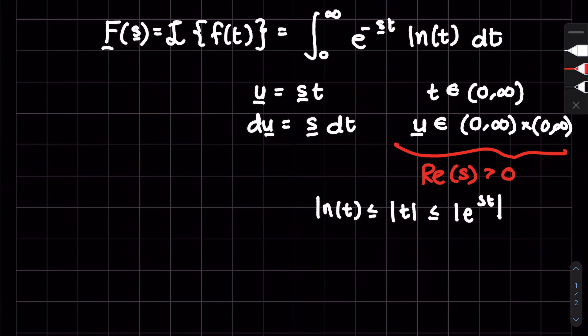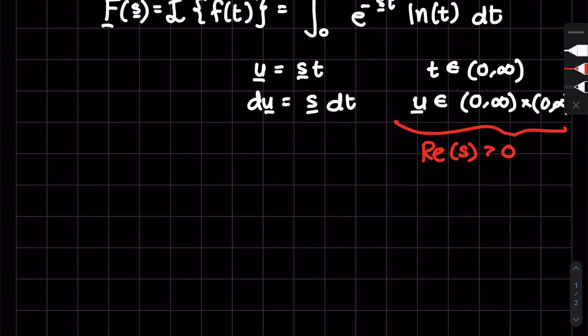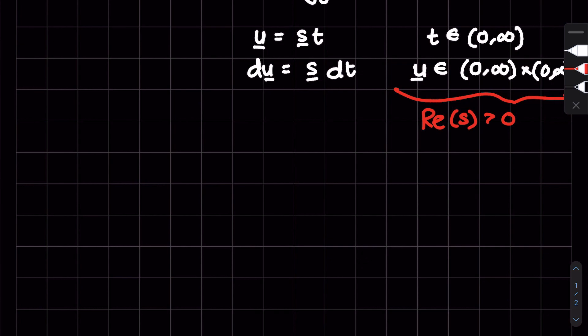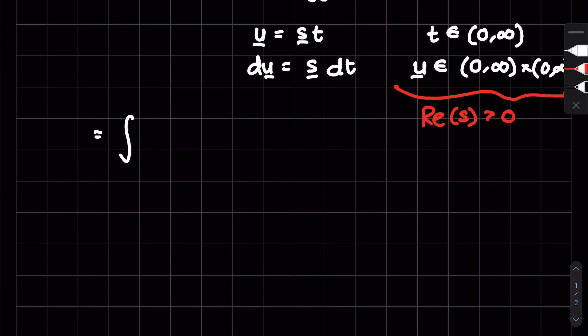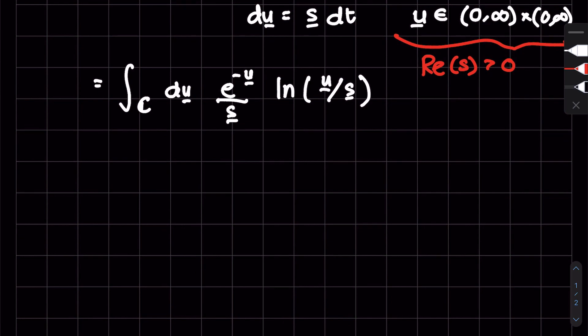So now with this substitution, and some idea for the region of convergence, you can just take my argument for it or see what happens later if we don't assume this. So if it converges, our assumption was true; if it doesn't, it was false. If we substitute this in, our bounds are no longer from zero to infinity, it's some line on the complex plane. So we have the integral on C, du, e to the minus u over s, natural log of u over s. I'm underlining to denote the complex nature of the variables.